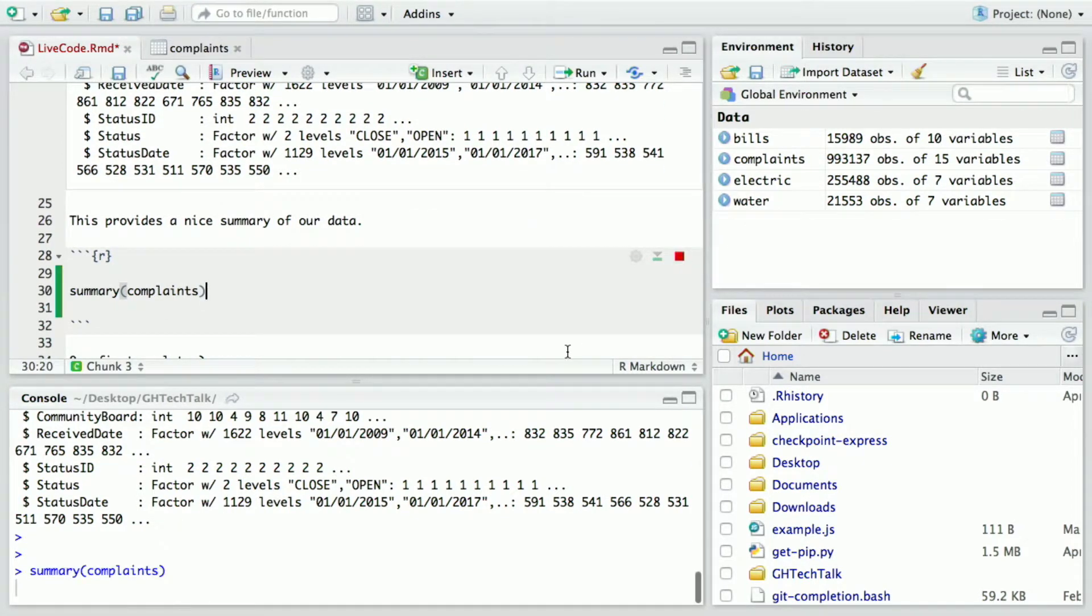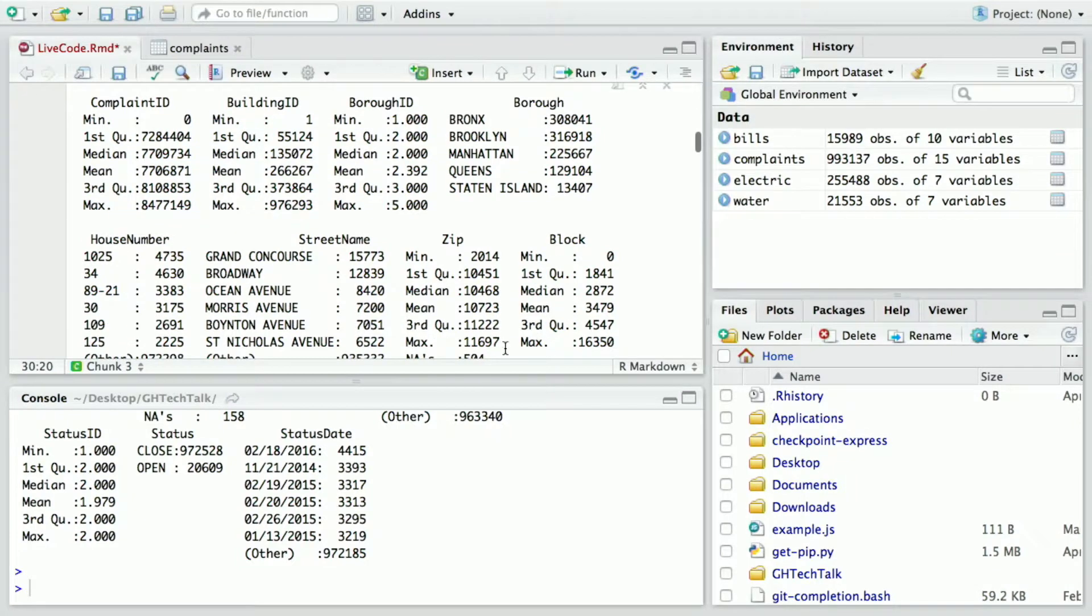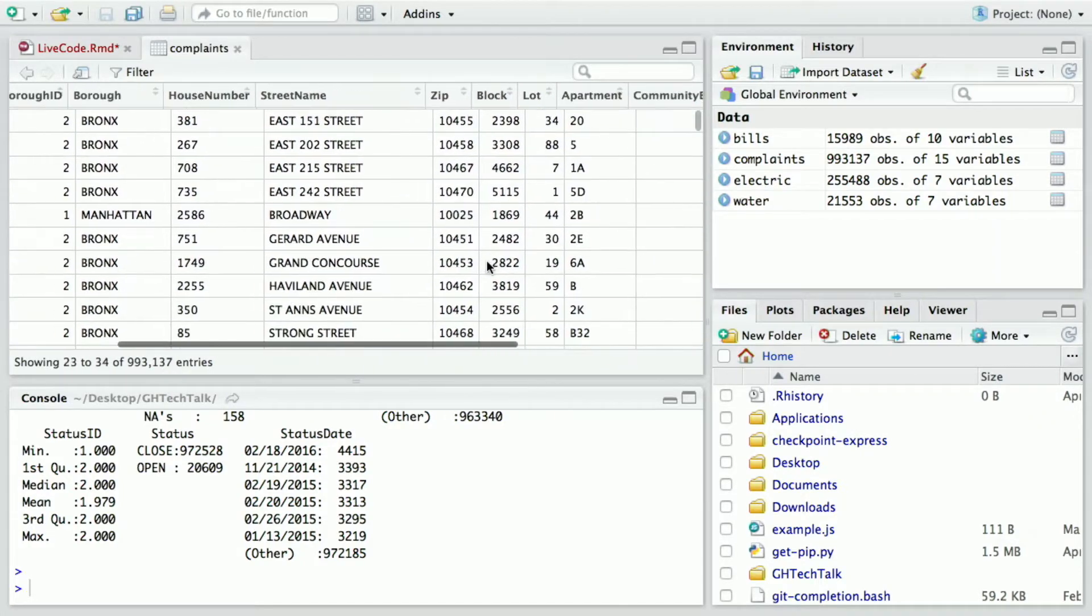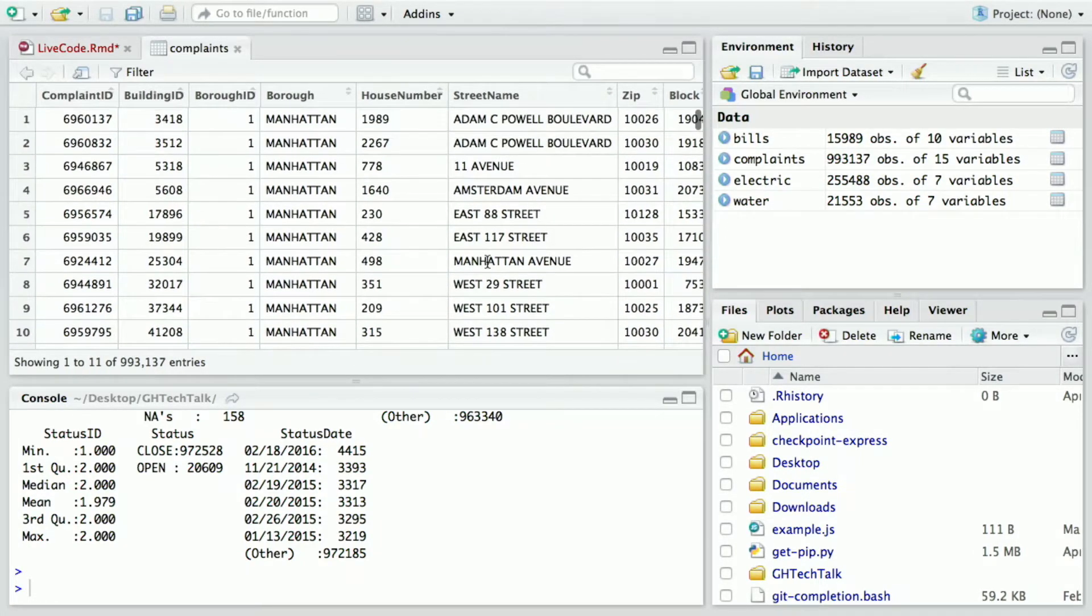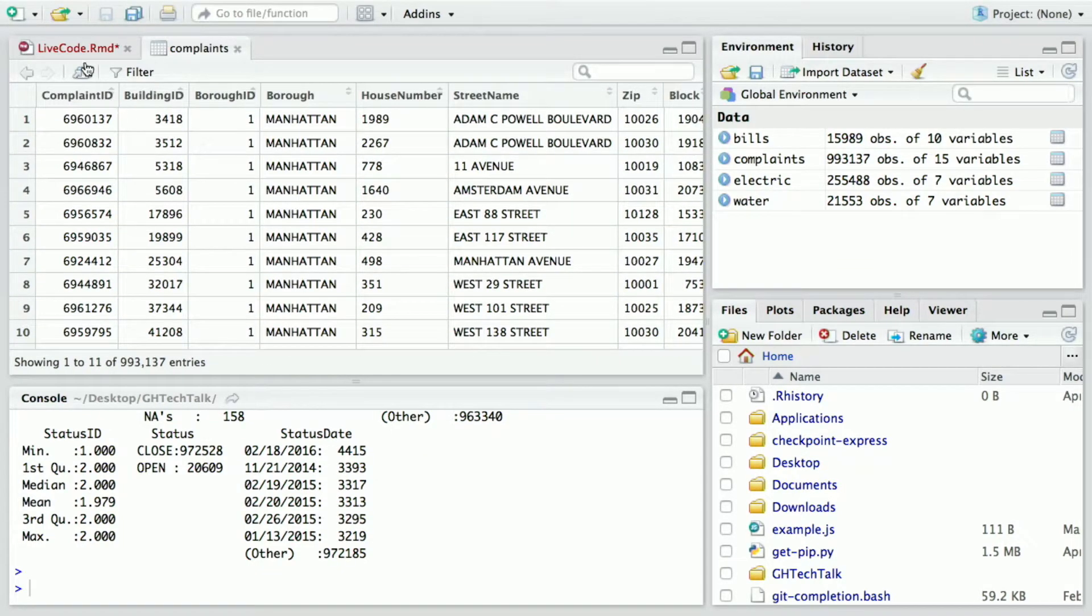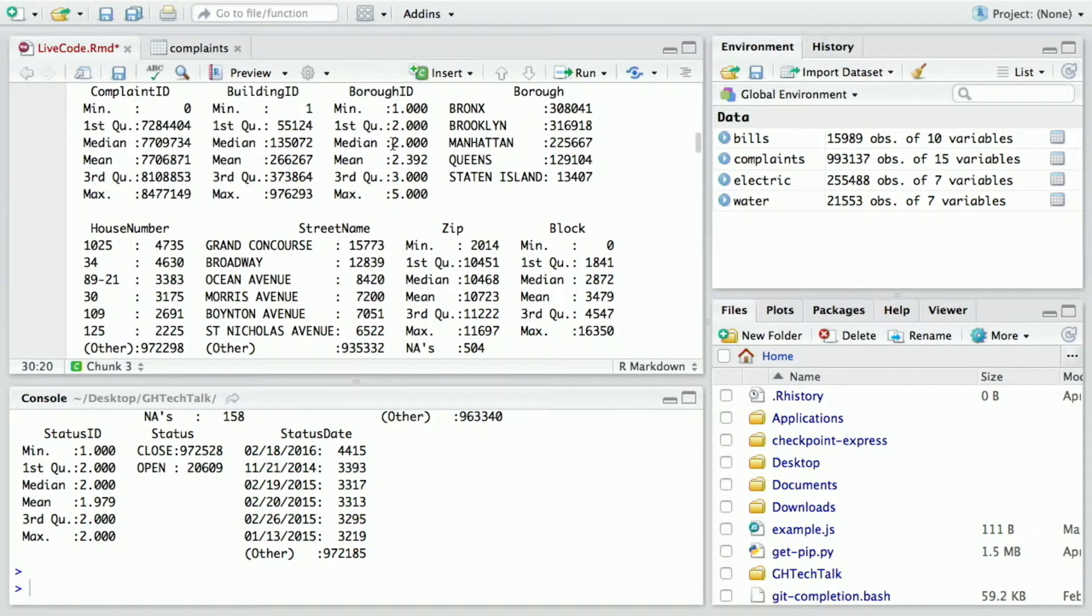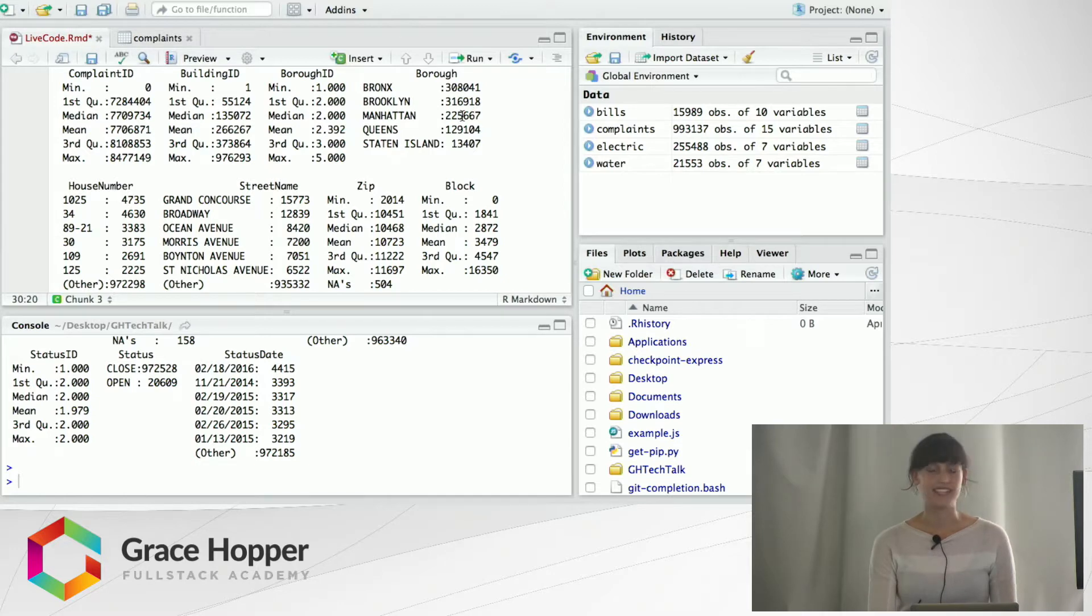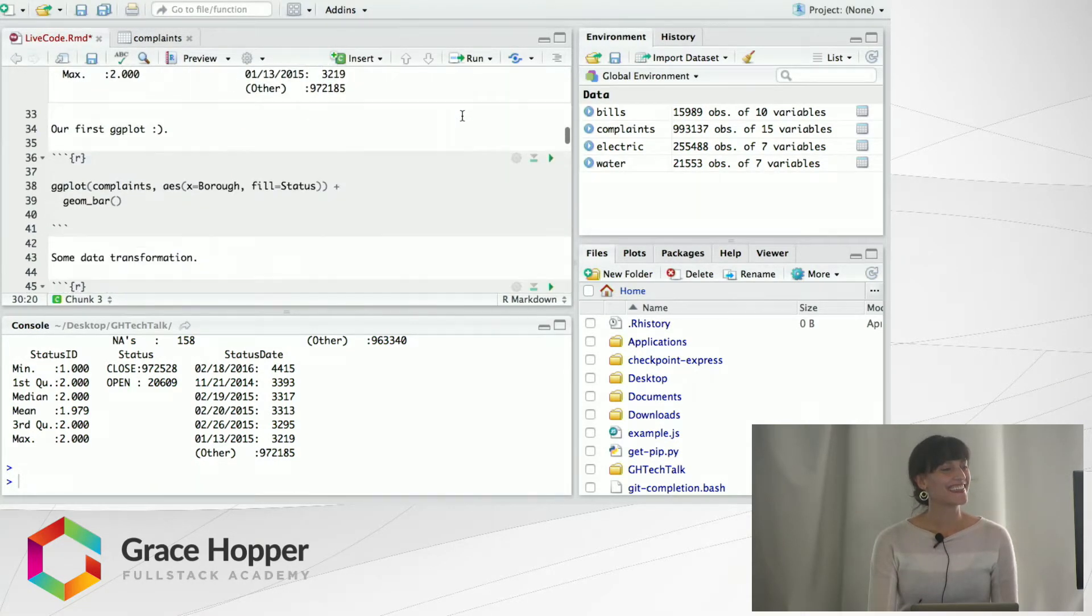So we can run our summary and this is already a little bit more helpful than say if we were to look at the complaints data set which we can open. The way that our visual cortex has evolved, like this doesn't really mean anything to us, right? It's just like a lot of black and white and it doesn't make sense. But even with this summary right here it makes a little bit more sense. For the numerical data it gives us the minimum, first quartile, median, mean, third quartile, max, and for categorical data it gives us like the number. So it makes sense that the largest number of complaints are in Brooklyn, but that's not as useful as making an actual visualization of that.